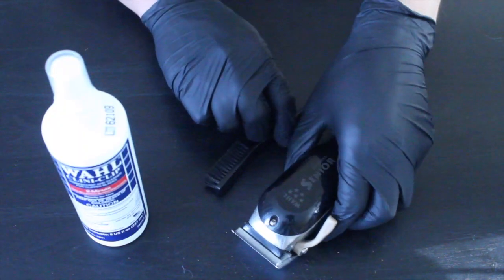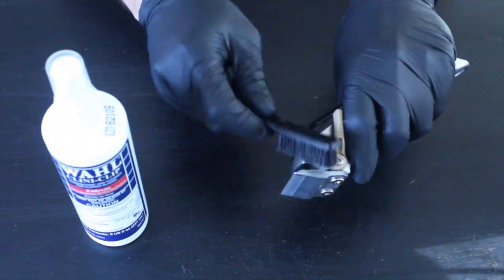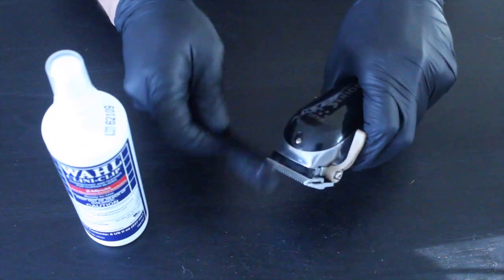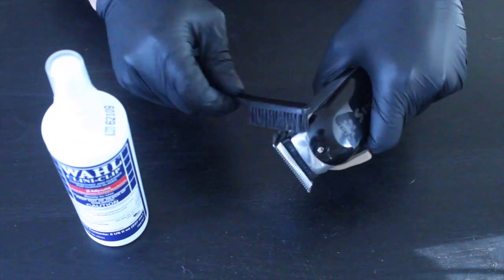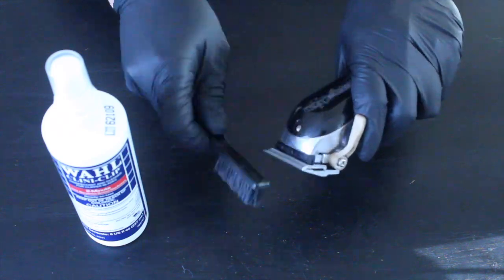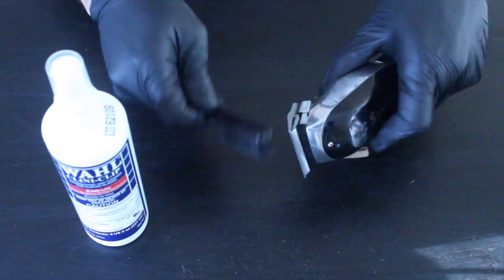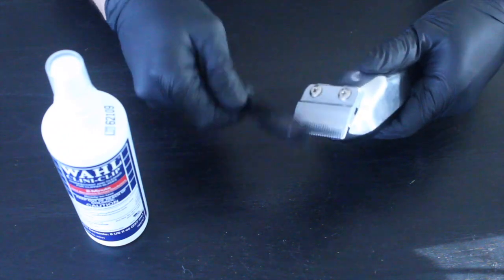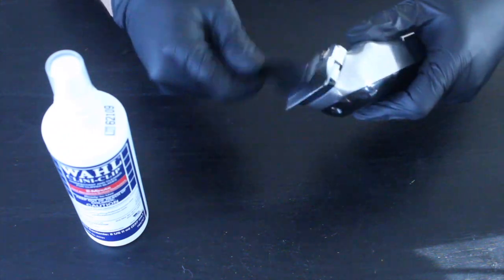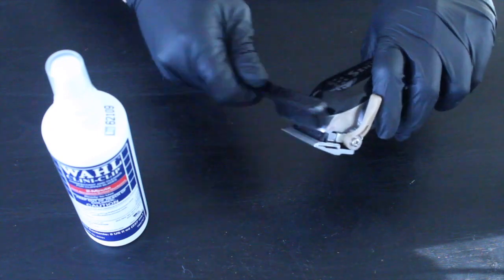Now we're going to move on to our clipper. This is the Cordless Five Star Senior. Use clipper on first haircut of the day. Clipper is cleaned and oiled from previous evening preparation. Upon haircut completion, remove loose debris from the clippers with a brush.